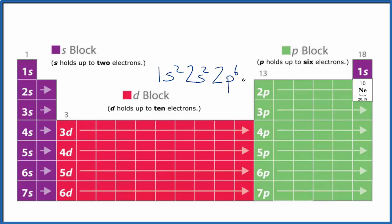2p⁶. If we count these up: 2 plus 2 is 4, plus 6, that's the 10 electrons. So this is the electron configuration for neon. We can use this now to write the orbital diagram for neon.